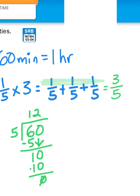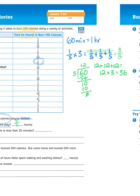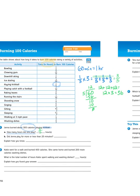So if I add one-fifth plus one-fifth plus one-fifth, that's the same as saying 12 minutes plus 12 minutes plus 12 minutes or 12 times 3. There we go. What's 12 times 3, everybody? Well, that's 36. So that means it takes 36 minutes to burn 300 calories.